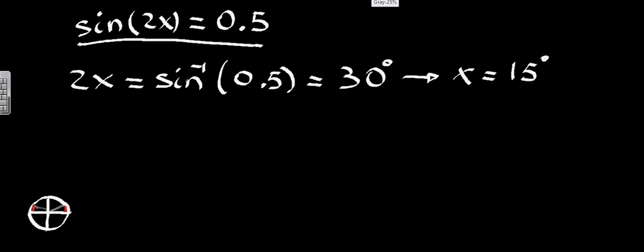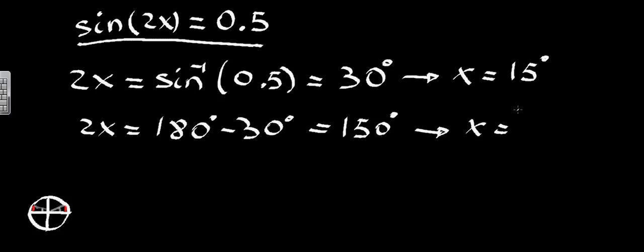The two angles, remember this one here was 30 degrees, this one here is also 30 degrees, which means in terms of absolute values, what we have is that 2x is also equal to 180 minus 30 degrees. Which is going to give us 150 degrees, which implies that x is also going to be equal to 75 degrees.